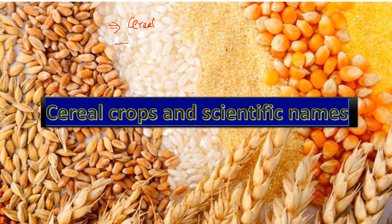Cereal crops are grass-cultivated crops. The grain contains endosperm and bran. Compared to protein, vitamins, and minerals, cereal crops are predominantly rich in carbohydrates.